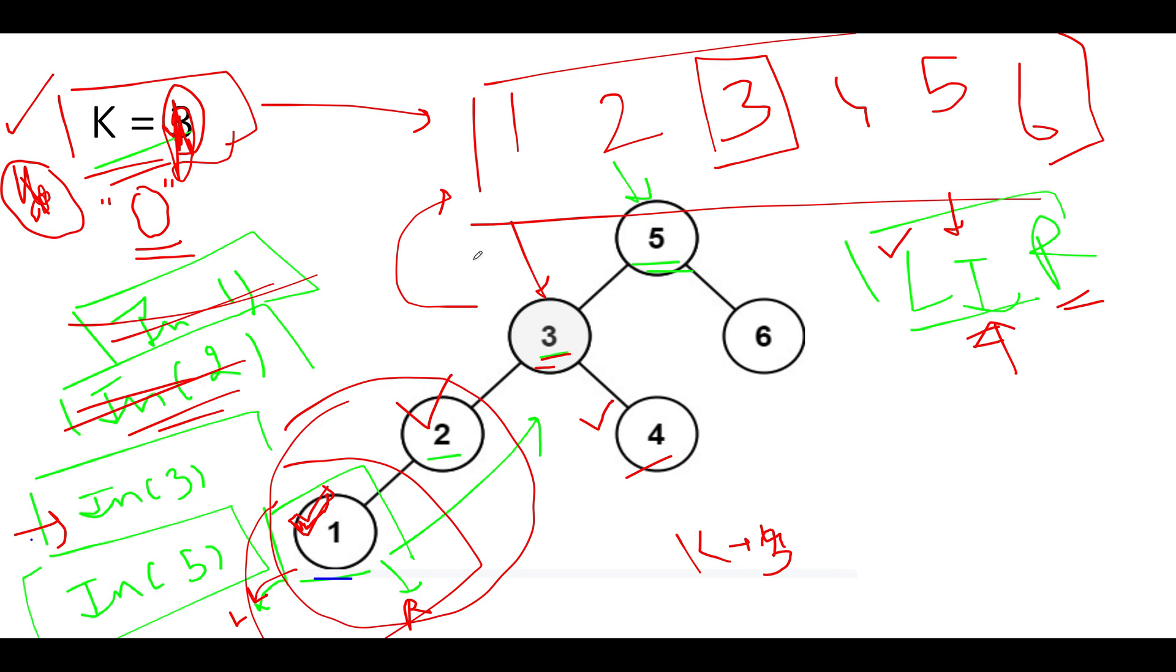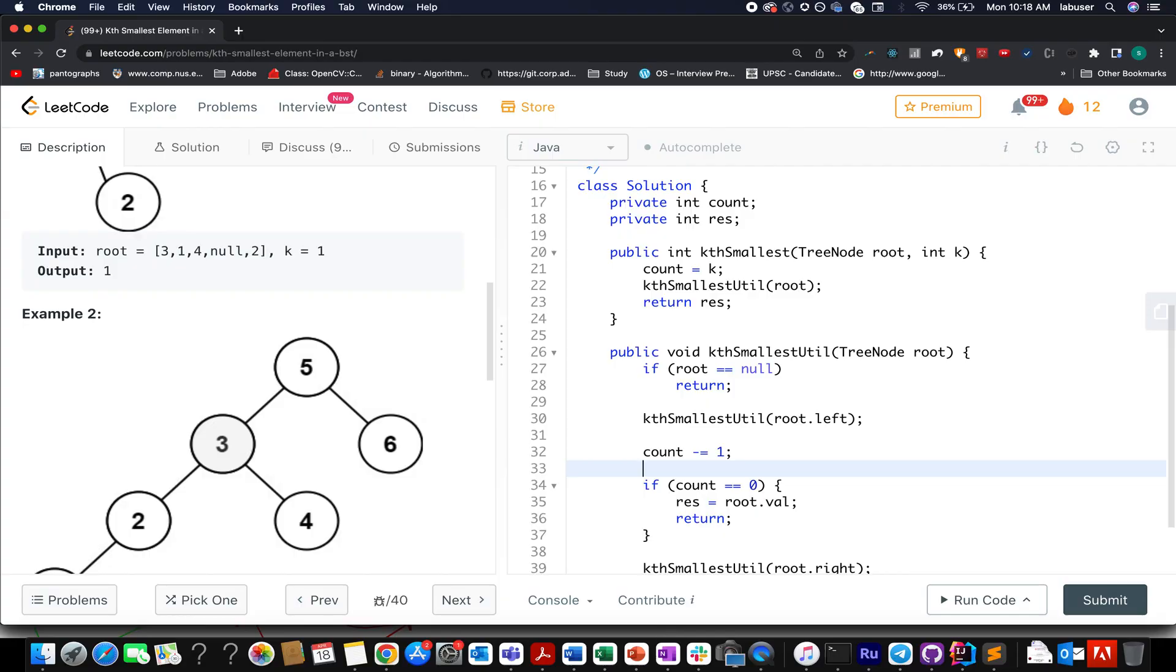To conclude it further, let's quickly walk through the coding section. Here I've created two variables. One is the count, which is a copy of k. The other is for storing the result. In the kth smallest method, I simply update count to k and I invoke my kth smallest util. I pass in the root and in the end, I simply return the result.